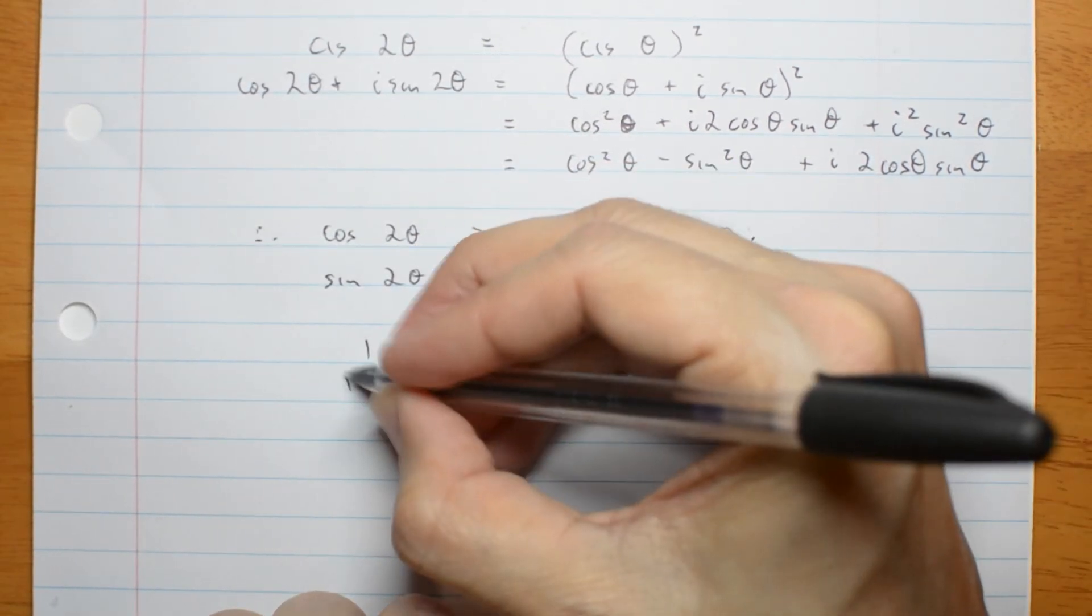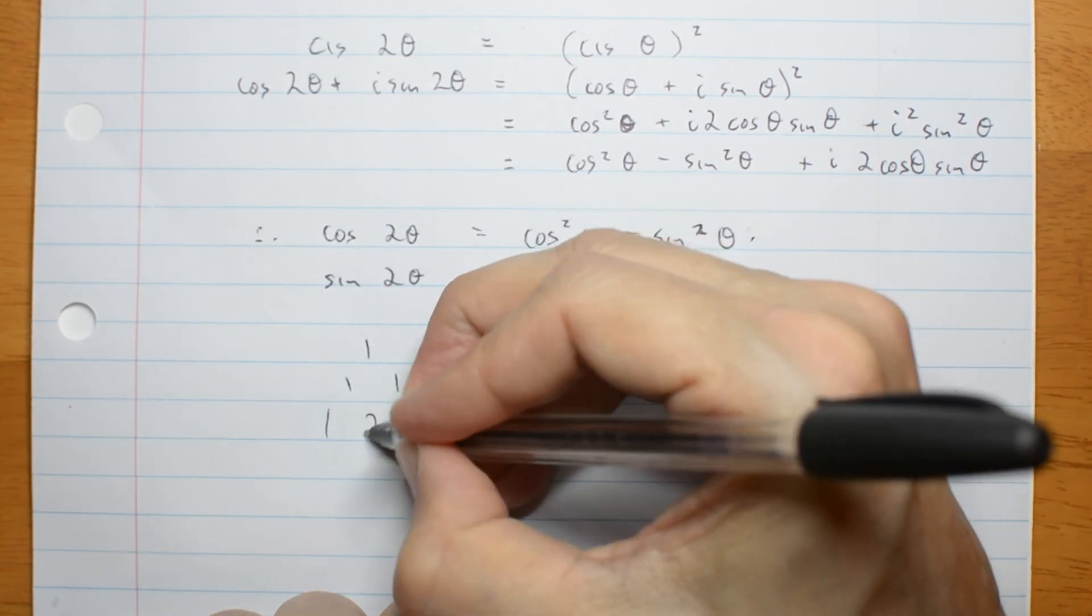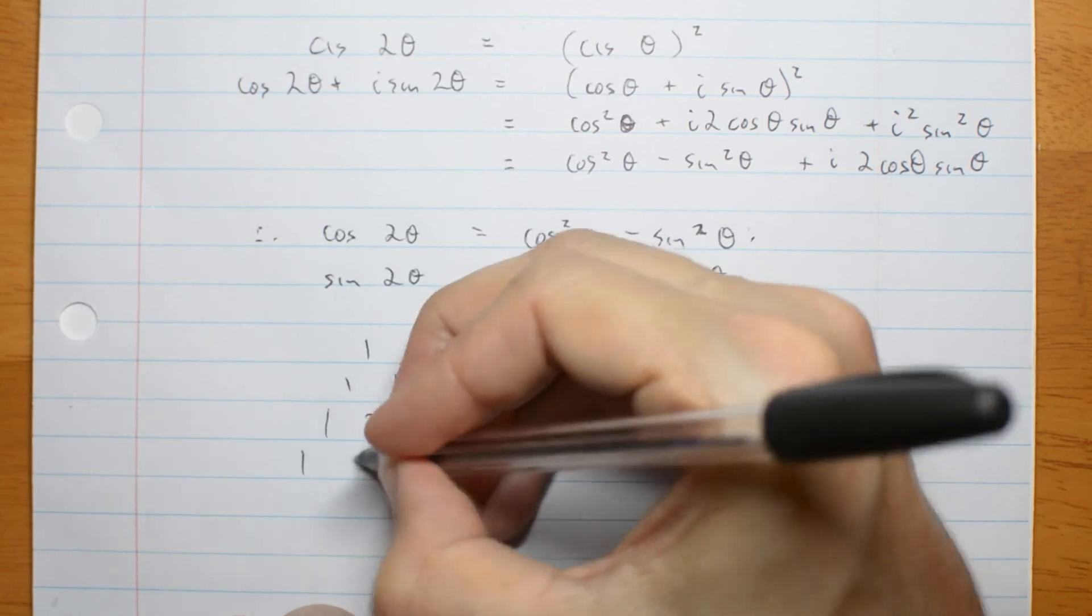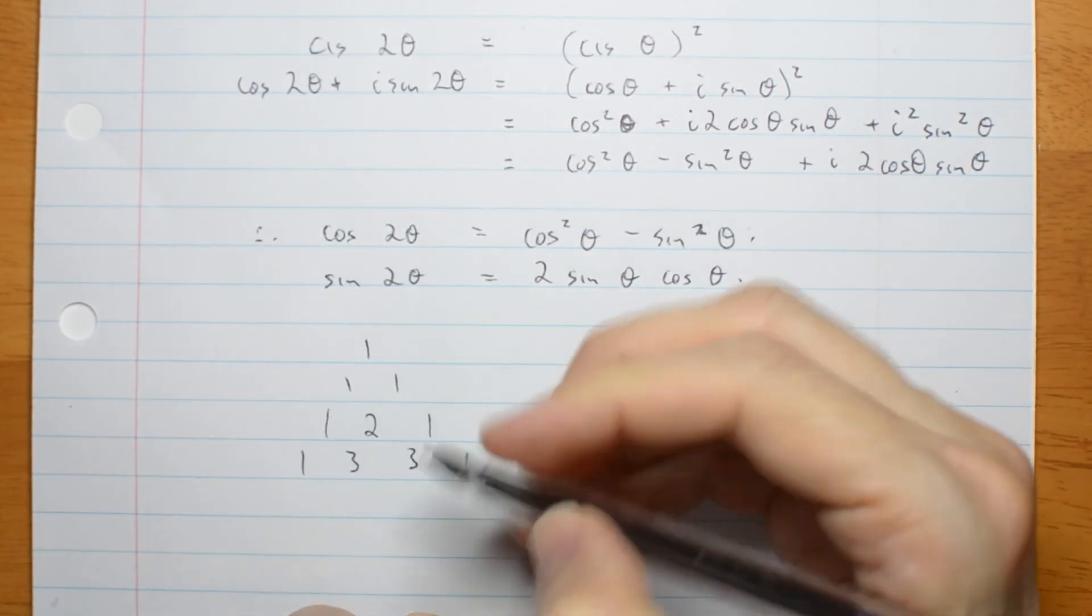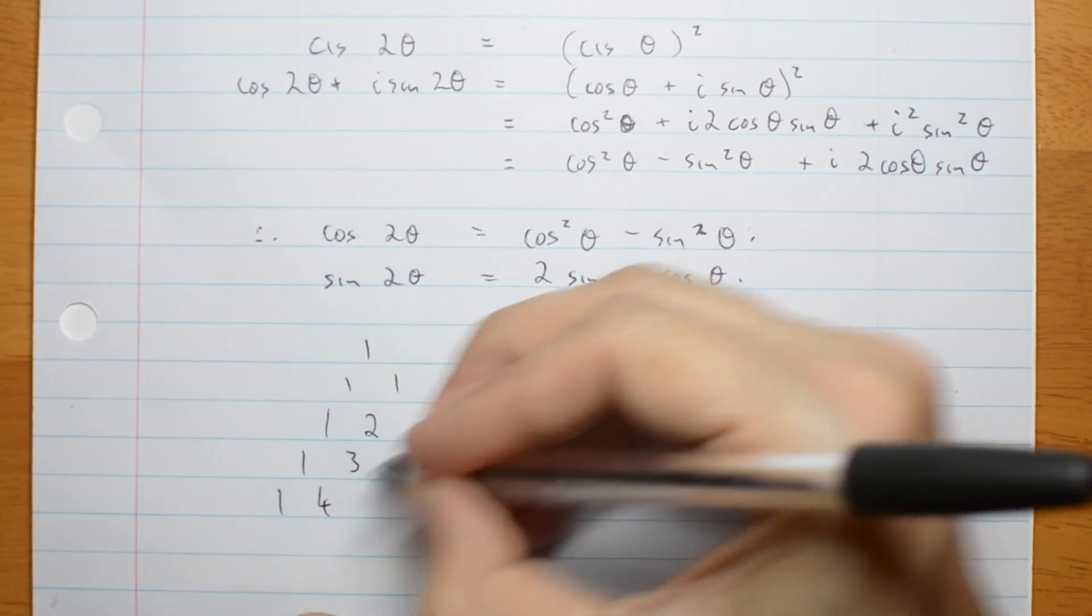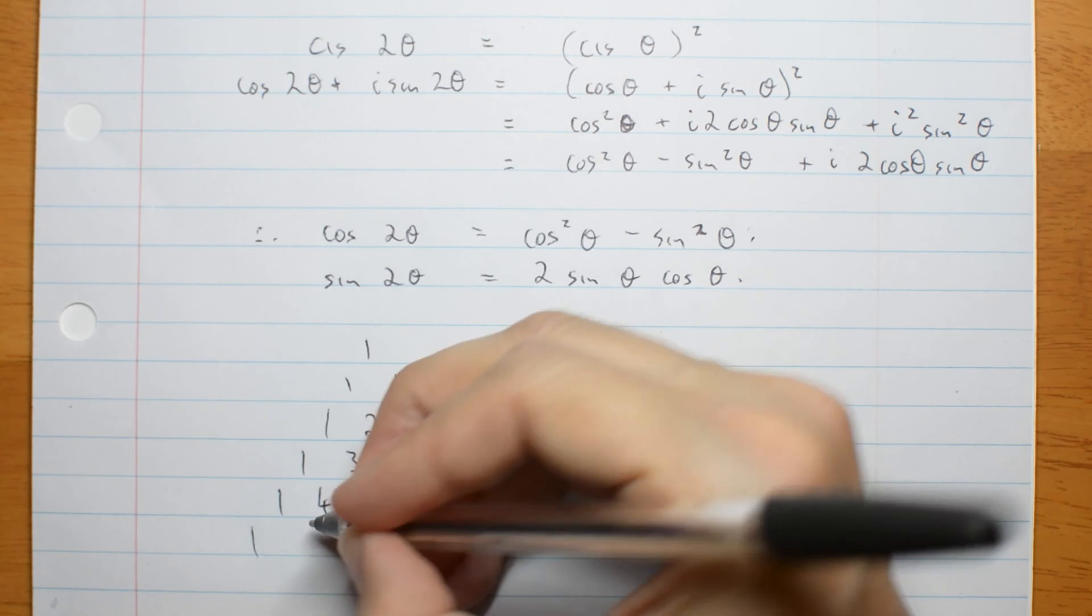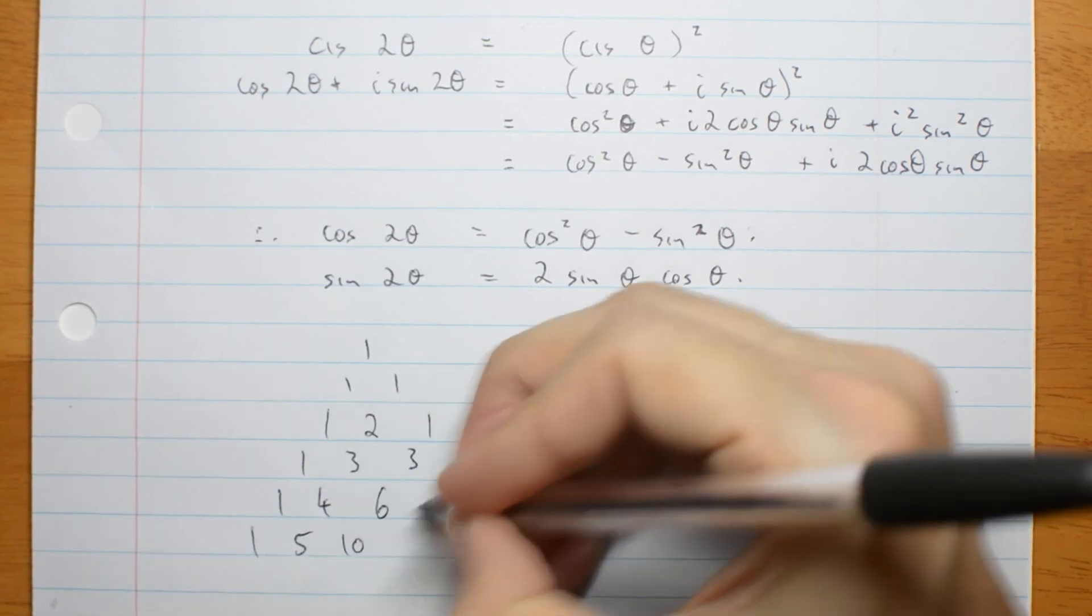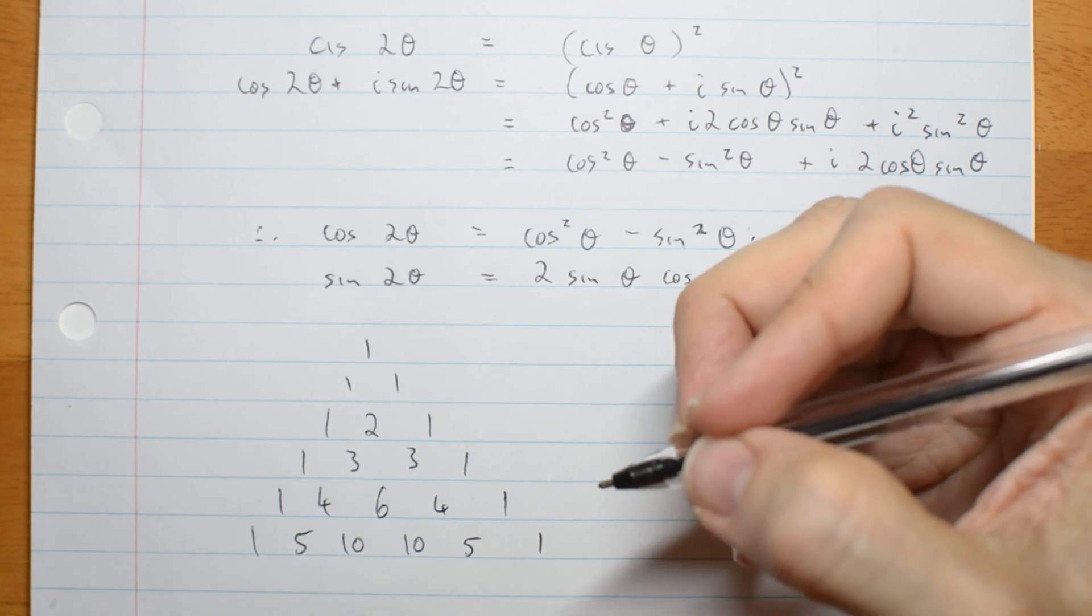You take numbers like this. You put 1s on the ends and you add the two numbers above for each row. 1 plus 2 is 3. 2 plus 1 is 3. Next row: 4, 3 and 3 is 6, 4, 1. Then 5, 10, 10, 5, 1.